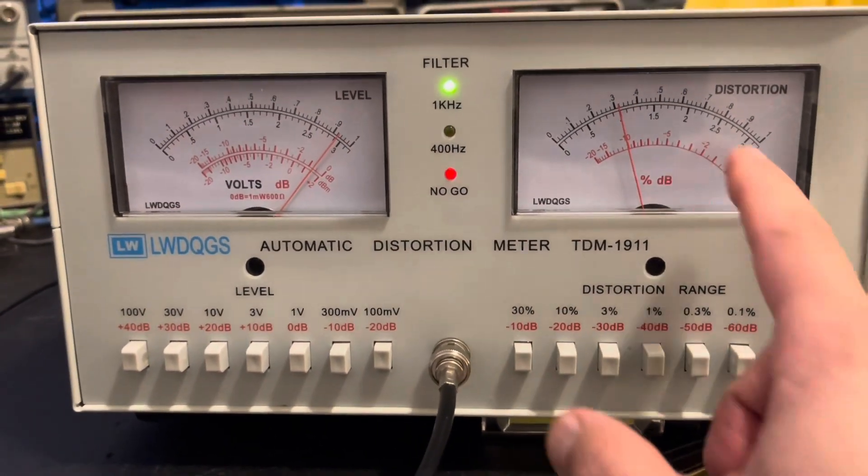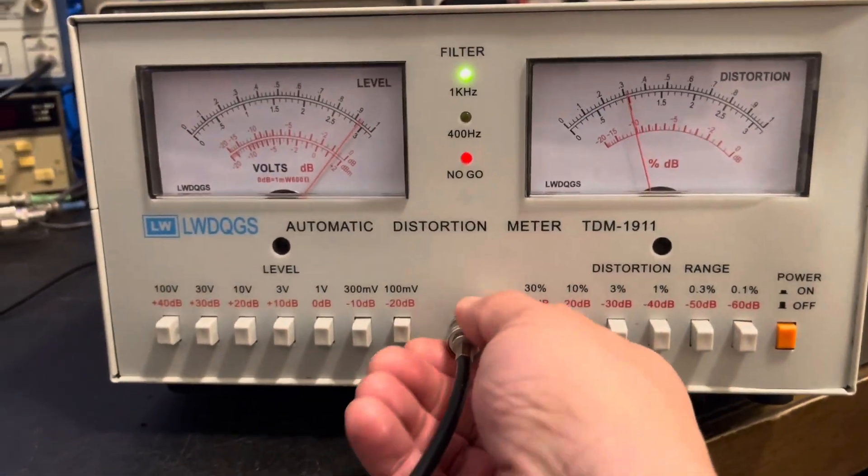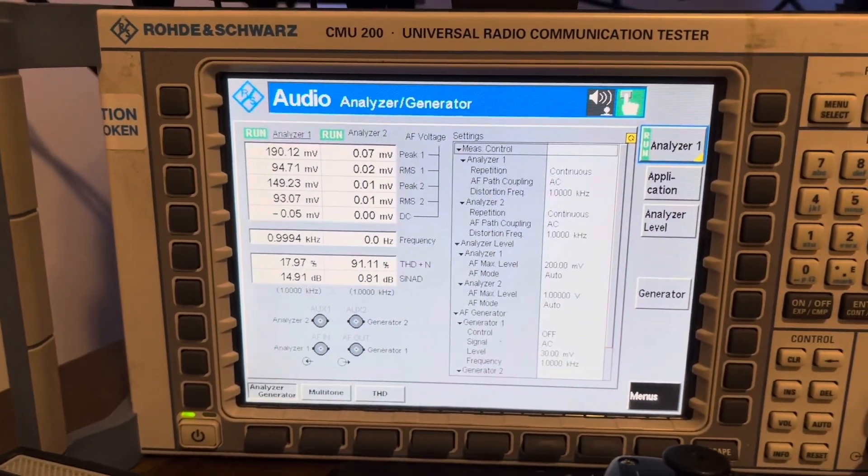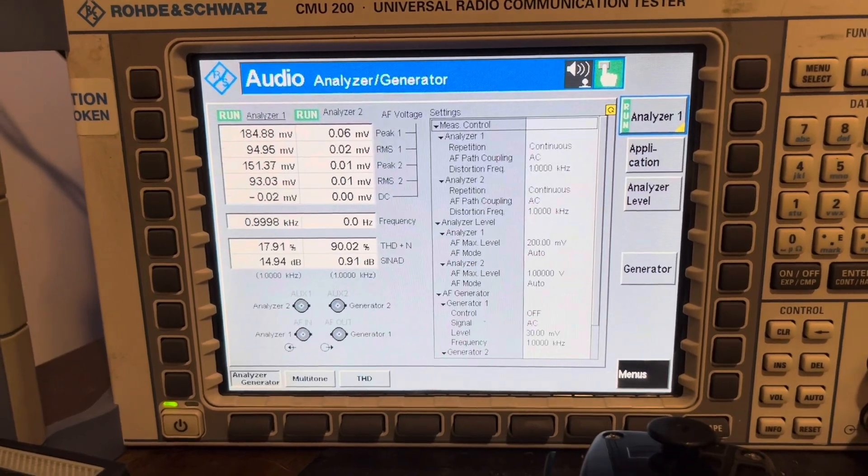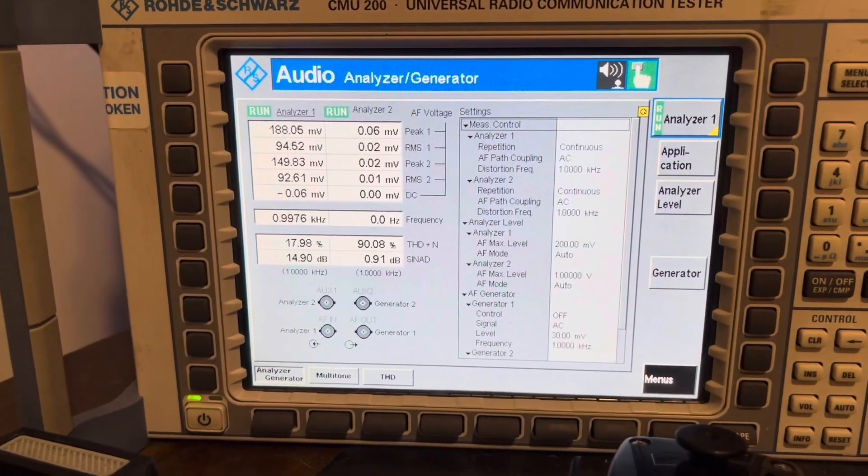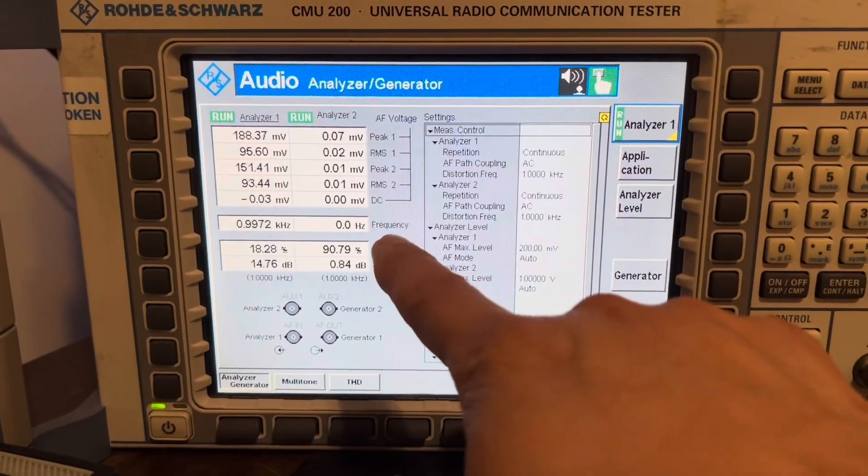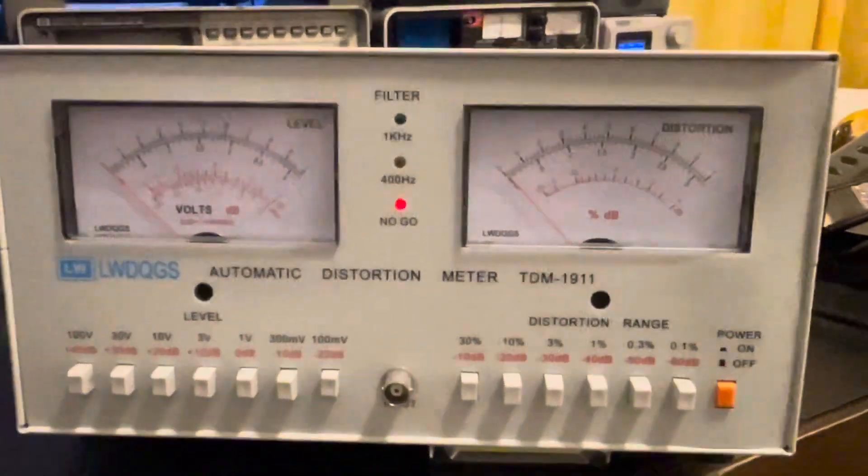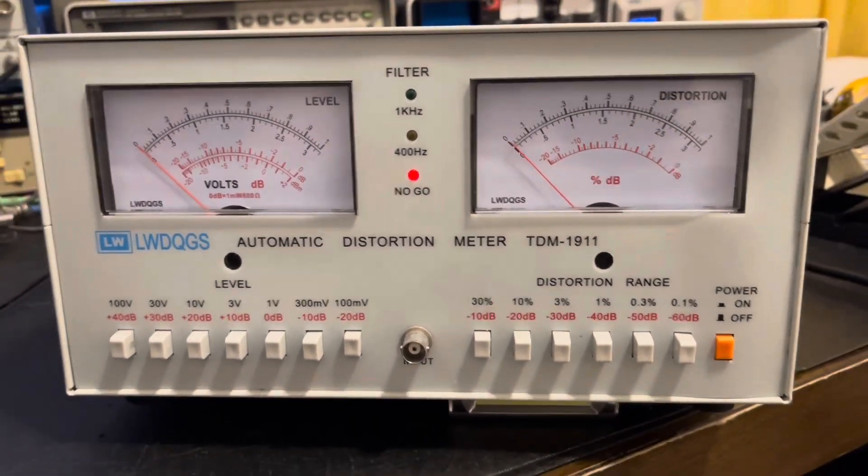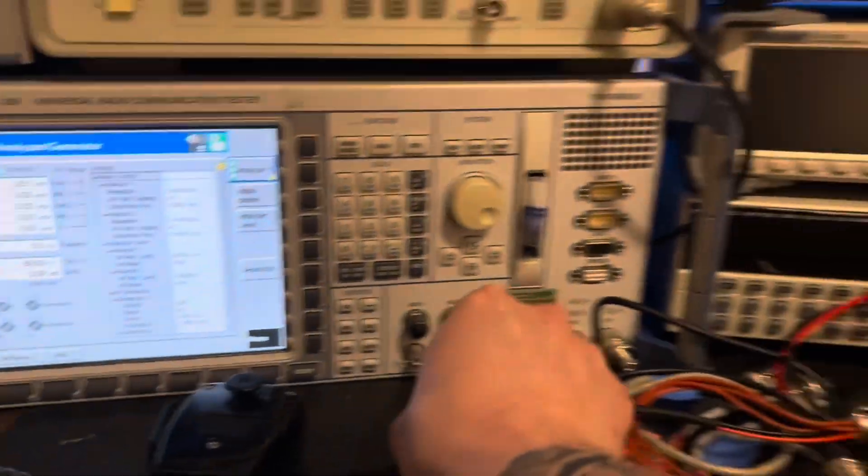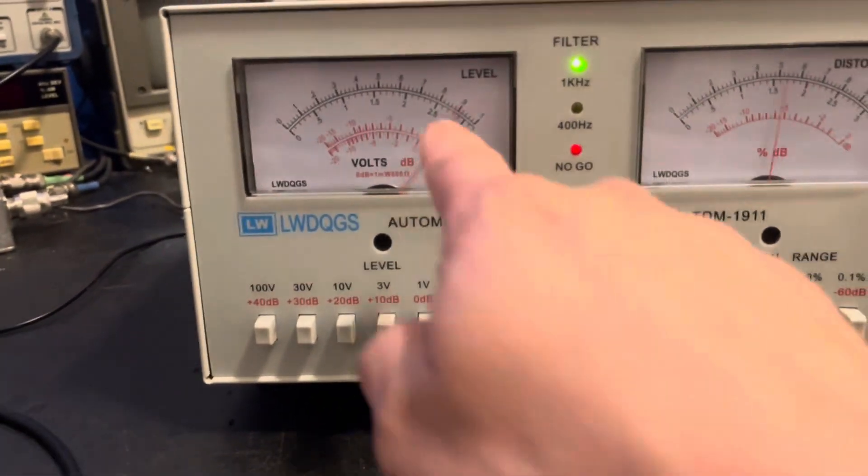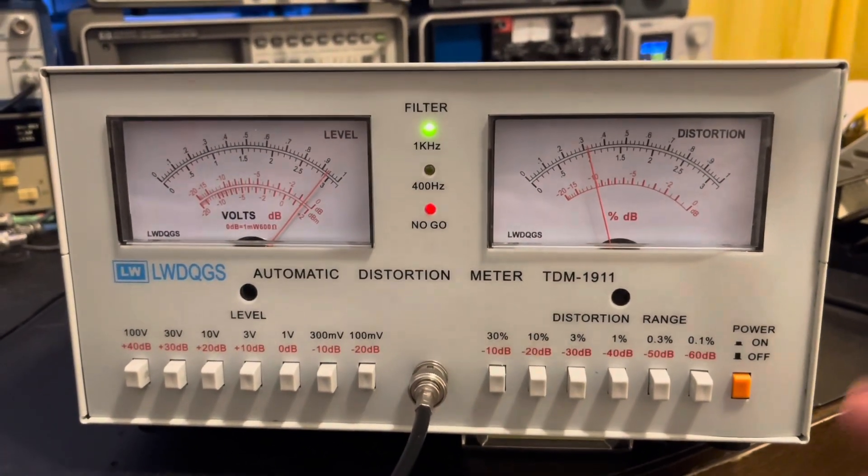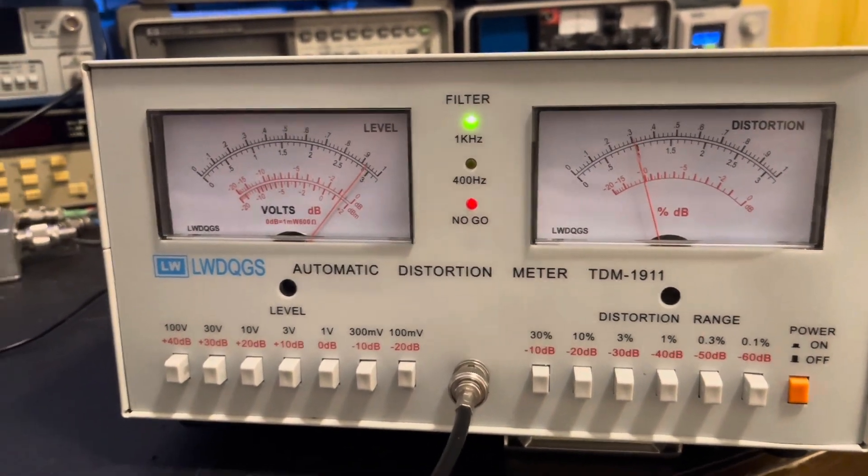Let me put it back over here one more time. You can see the disparity right now between the CMU 200 and the TDM-1911 is about eight percent as far as total distortion. Again, this one's reading THD. I'm not really sure if this one is looking at all harmonics outside that one kilohertz filter or something else. The signal level matches up pretty well but our distortion level is different. It's not drastically different, it's still within ten percent of each other.